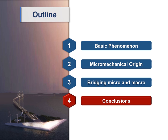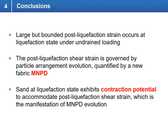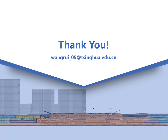In conclusion, there are three main take-home messages. First, large but bounded post-liquefaction shear strain occurs at the liquefaction state under undrained loading. Second, this post-liquefaction shear strain is governed at the micro scale by particle arrangement evolution, quantified by the newly proposed fabric measure MNPD (mean neighboring particle distance). Third, sand at the liquefaction state exhibits contraction potential — it still has dilatancy — and this contraction potential accommodates post-liquefaction shear strain, which is the macroscale manifestation of MNPD evolution. Thank you very much for your attention.